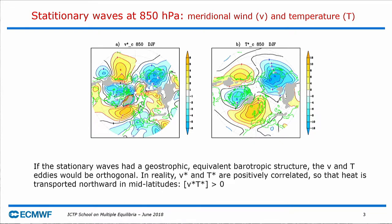Looking at the stationary waves at 150 hPa in DJF for the last 30 years or so, plotting meridional velocity V and temperature: if the structure were equivalent barotropic, these would be out of phase. But you can see there are regions where they have the same sign. This means that the product V×T is positive — the stationary waves transport heat to the north.